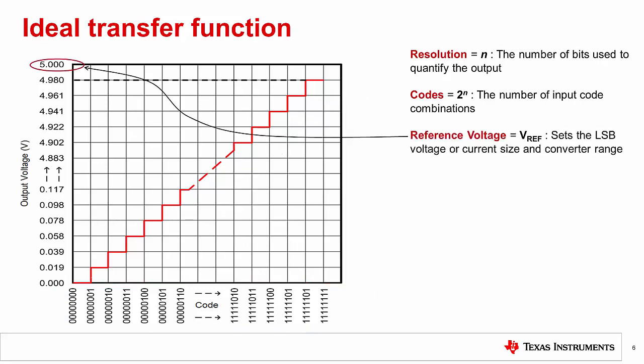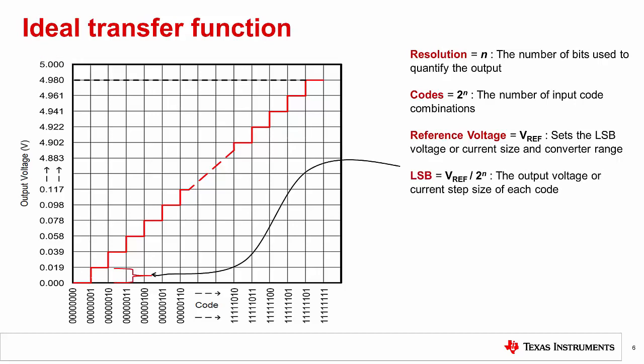The reference voltage is at the top of the y-axis. Along with directly affecting LSB size, the reference voltage limits the possible output of the DAC. The LSB is the height of each step. For this 8-bit DAC with a 5-volt reference, each code increments the output by about 19 millivolts.